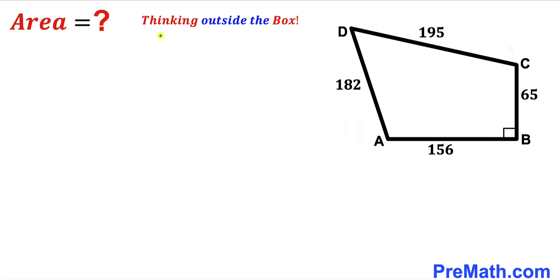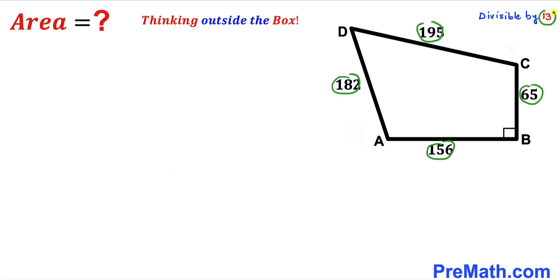Let's think outside the box and make an observation. We can see all of the dimensions of this quadrilateral are divisible by 13 across the board. So therefore we are going to divide each and every number by 13.